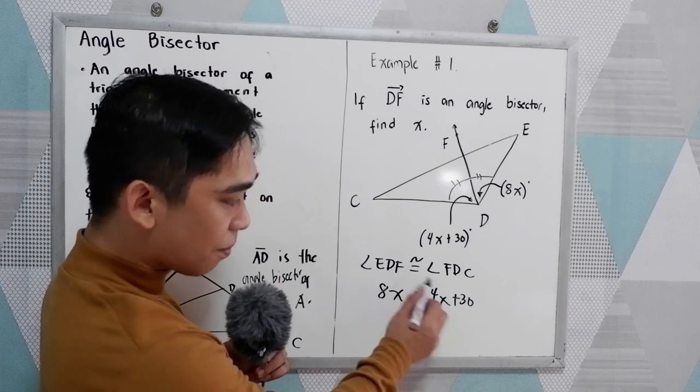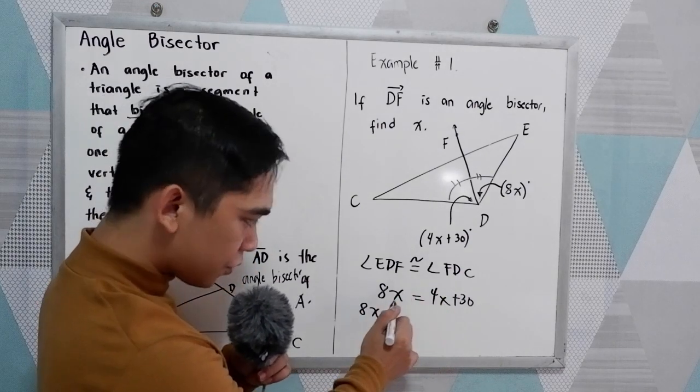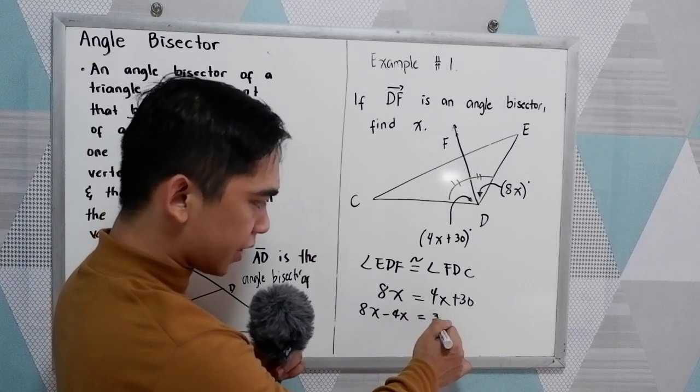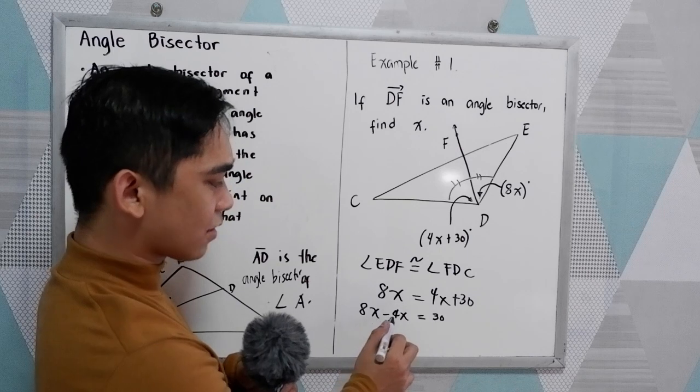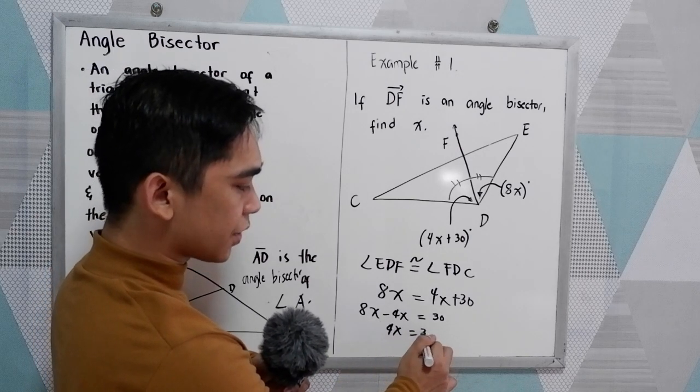Now solve for X. Combine like terms. We have 8X. Move to the left, change the sign. That will become minus 4X is equal to 30. 8X minus 4X, that is 4X is equal to 30.